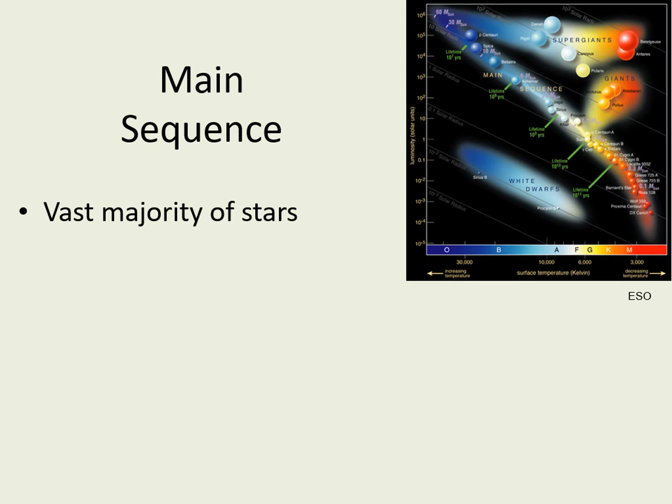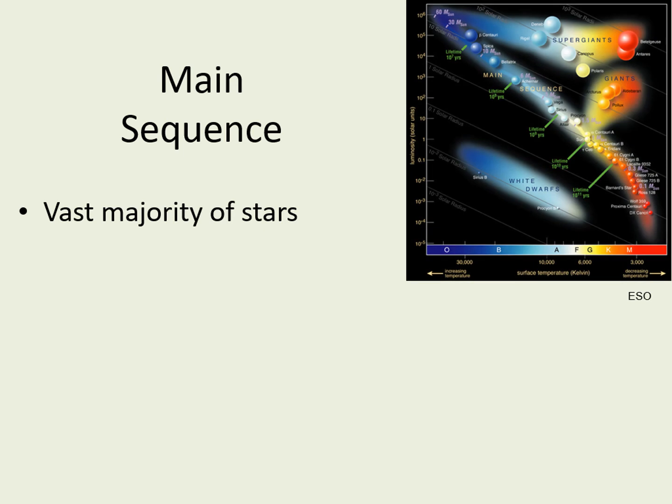The vast majority of stars we find around us in space are part of the main sequence. The reason for this is that the main sequence is where stars spend most of their lives. Physically, the main sequence consists of stars that generate energy the same way the sun does — they fuse hydrogen into helium in their cores. In fact, the sun is near the middle of the main sequence.